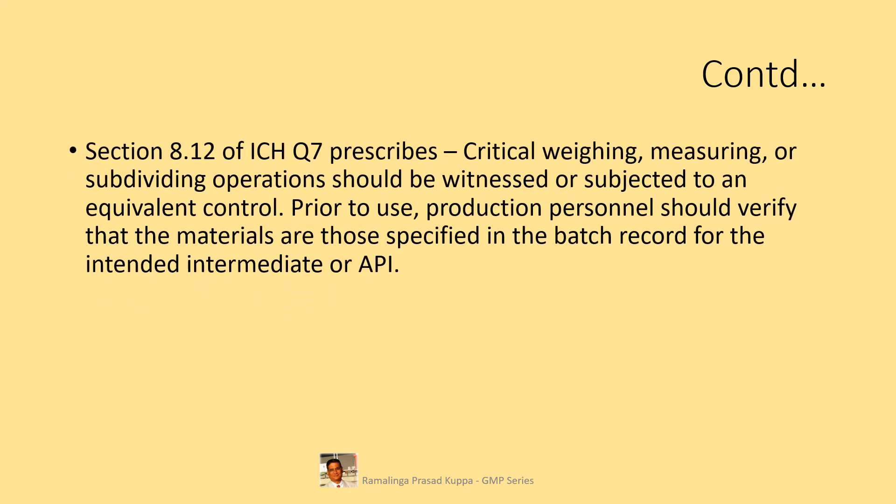Section 8.12 of ICH Q7 prescribes that critical weighing, measuring, or subdividing operations should be witnessed or subjected to an equivalent control. Prior to use, production personnel should verify that the materials are those specified in the batch record for the intended intermediate or API.